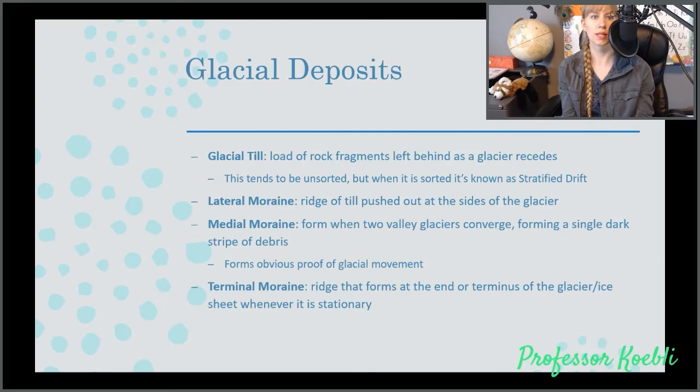Glacial deposits. Because even though they have a load, sometimes they can't carry the load and they get deposited, such as when glaciers recede or melt. They will actually leave behind their load and form braided streams, just like we learned before. Glacial till is the load of rock fragments left behind as the glacier recedes. They tend to be unsorted. But when it is sorted, it's known as stratified drift.